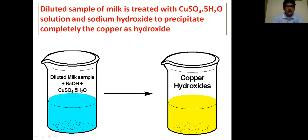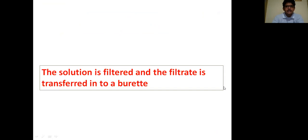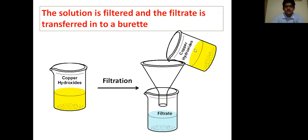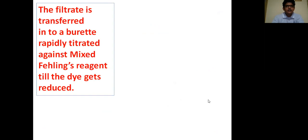Here is a diluted milk sample. In this sample we add NaOH solution and copper sulfate solution. When we add NaOH, all the copper will precipitate as copper hydroxide. Then the solution is filtered and the filtrate is transferred into a burette and taken for titration.